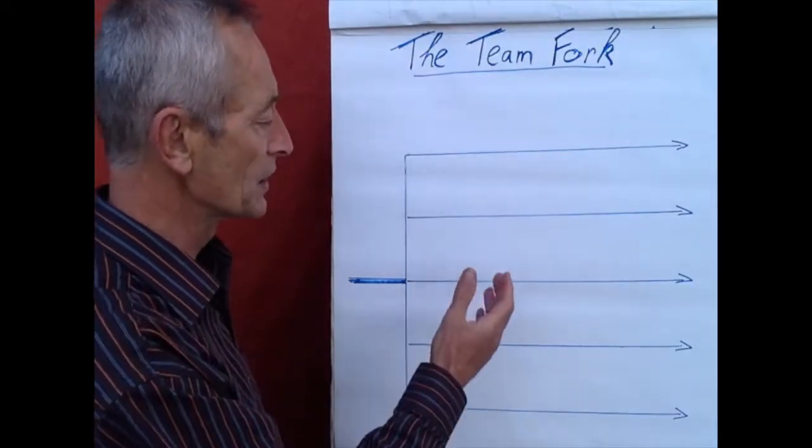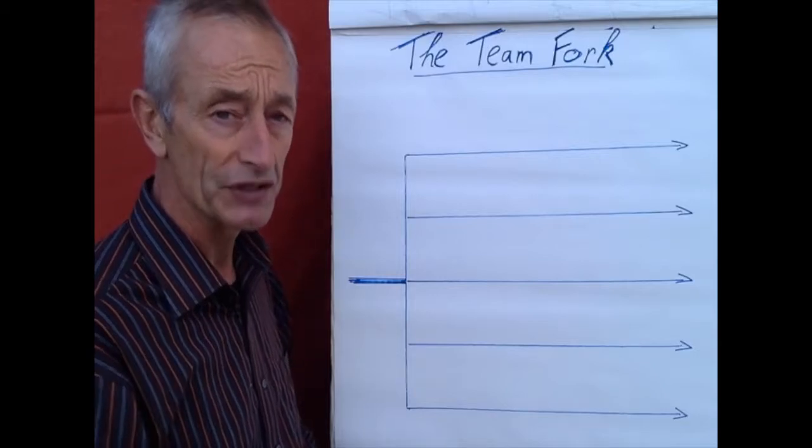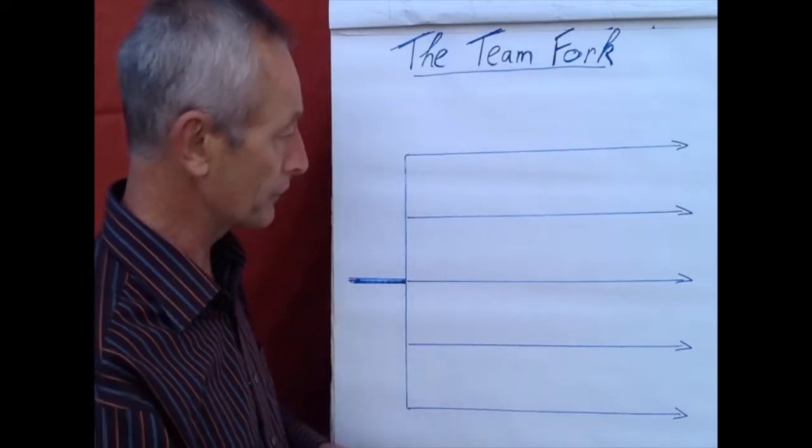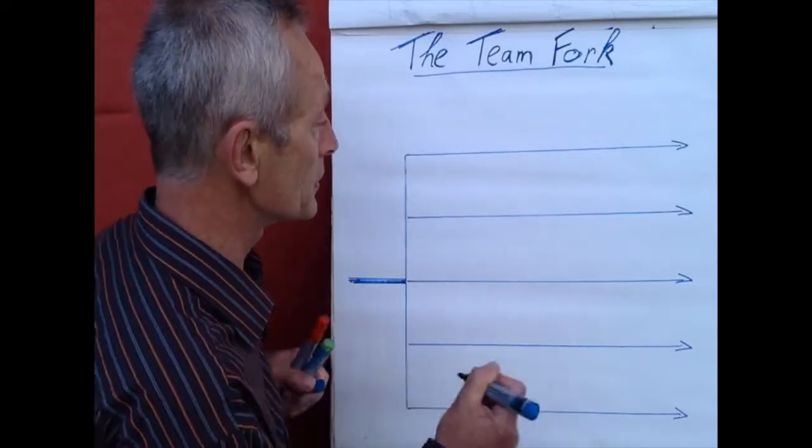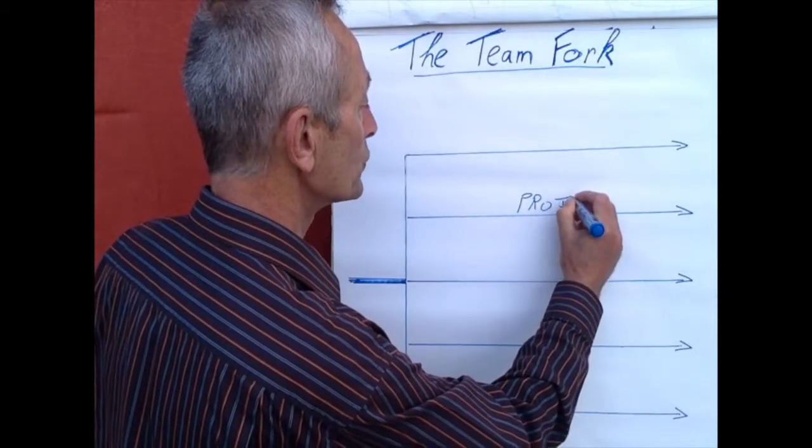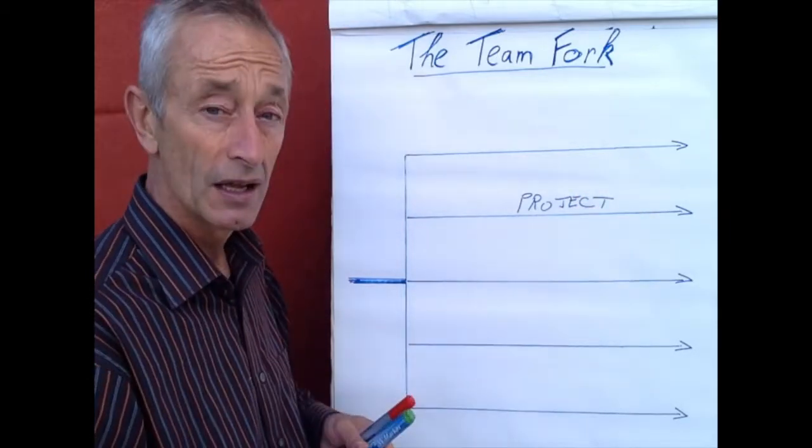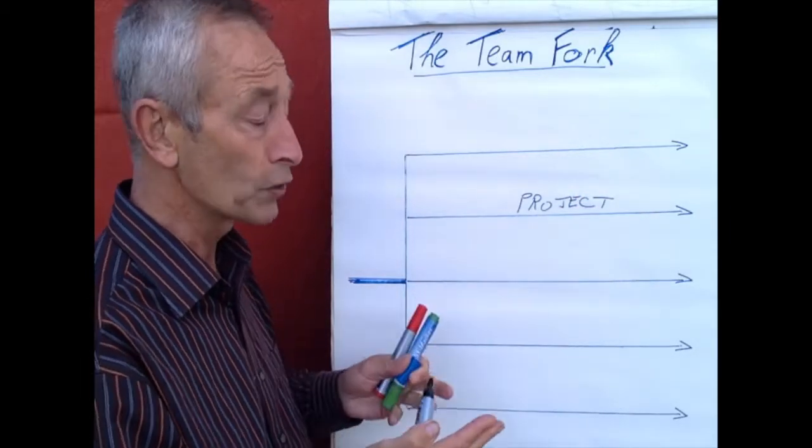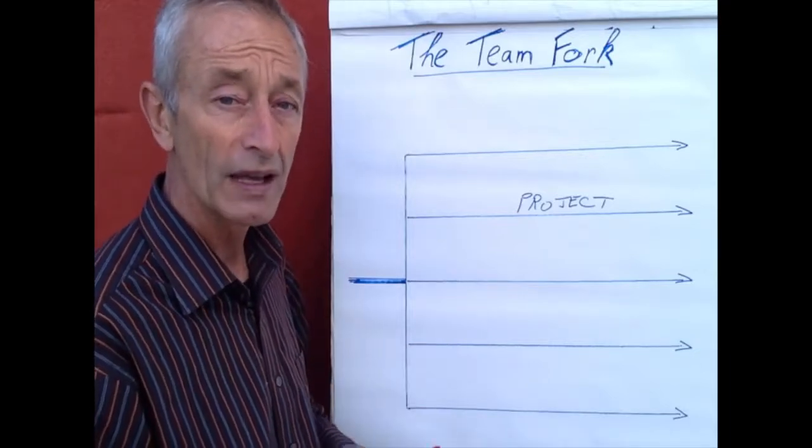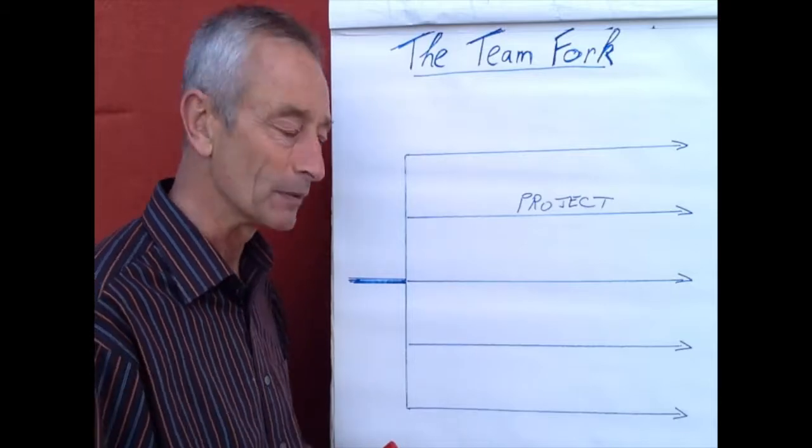So I came up with five tracks of development we have to distinguish. The first one, something we already know, is the task-oriented collaboration which I call the project. It is task-oriented and focused on an outcome. We can improve our task-oriented collaboration and become a high-performance team for example.